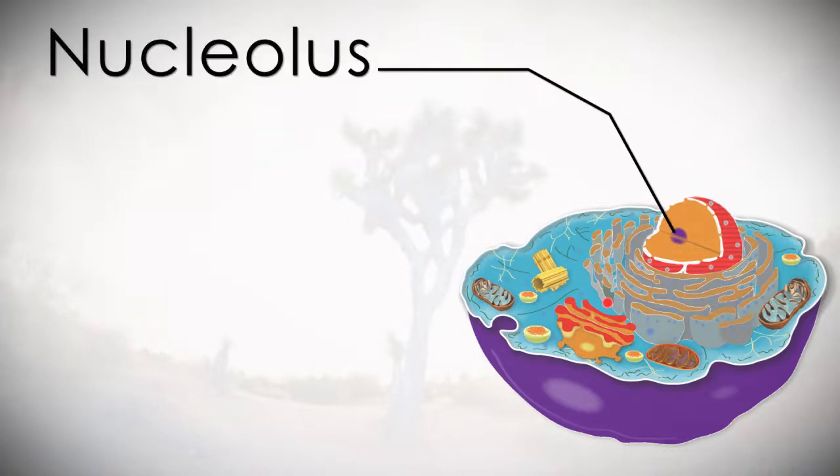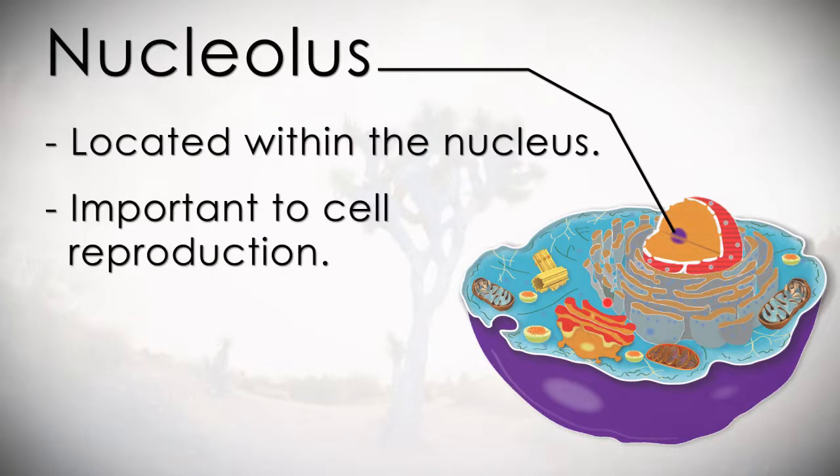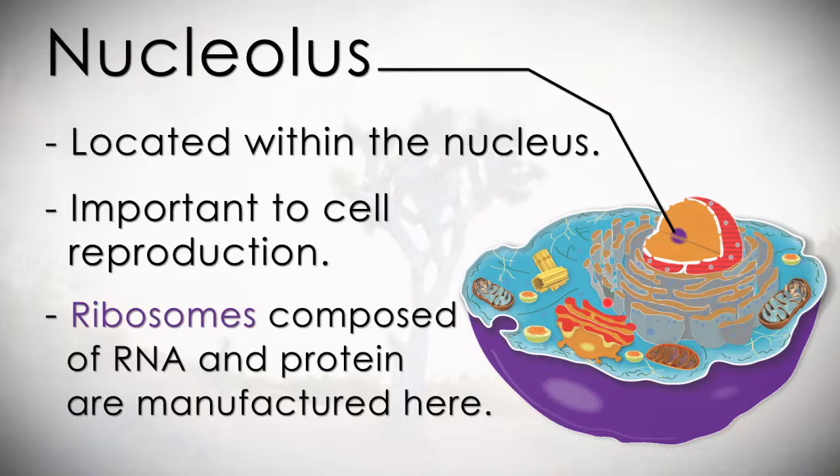Nucleolus. This is located within the nucleus and is important in cell reproduction. The ribosomes, composed of RNA and protein, are manufactured here.